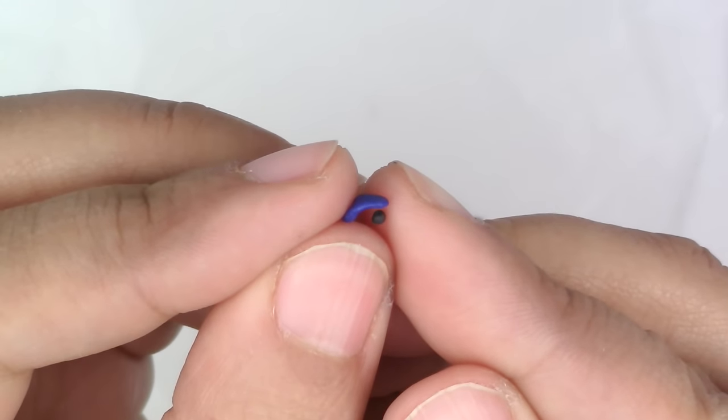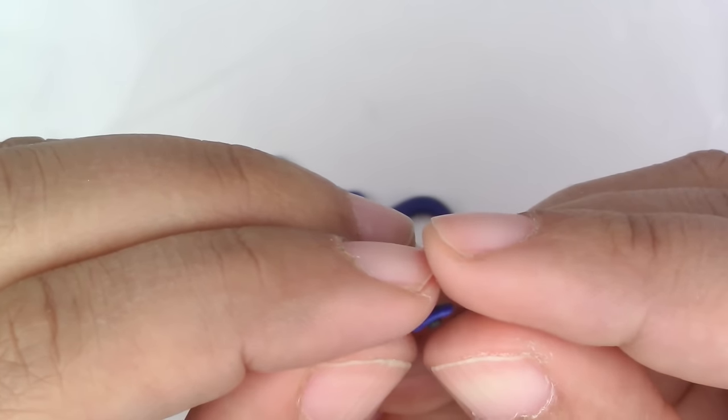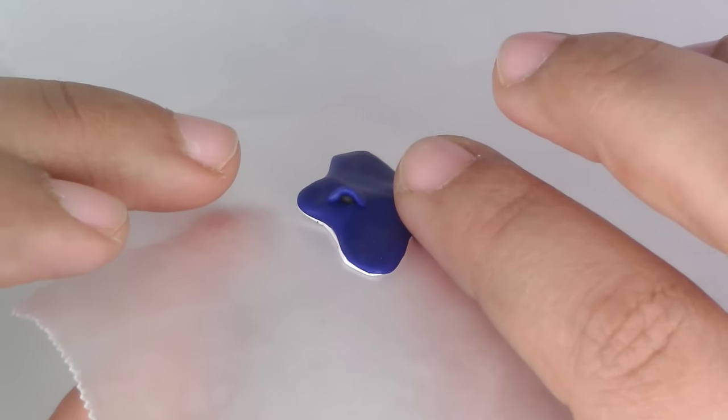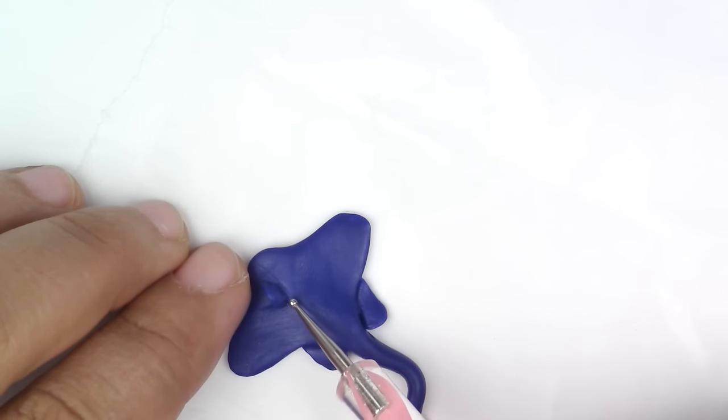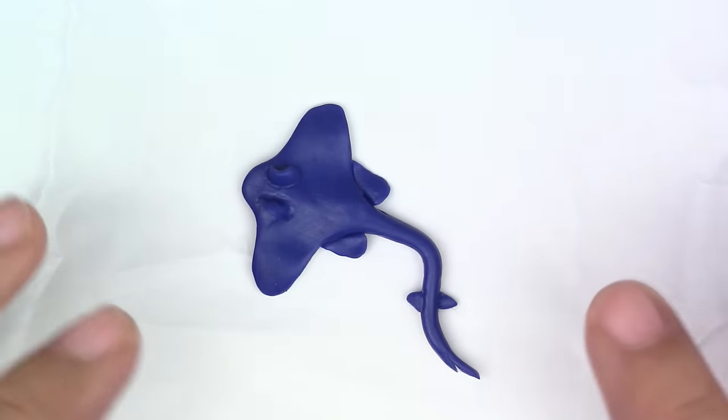To make the eyes, make an arch with your blue and insert a small ball for the eye. I chose to do black eyes, but you can do any color you want. Now smooth it on the head and bake it for 20 minutes at 275 degrees Fahrenheit. Make sure that your oven was preheated.